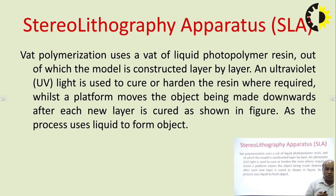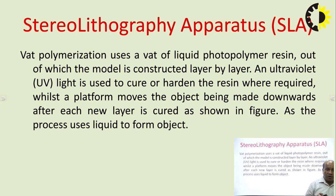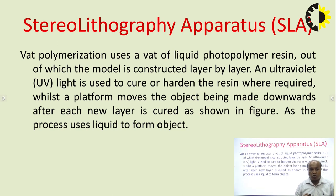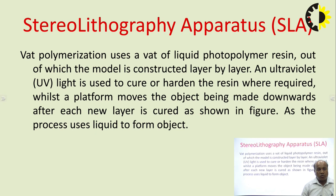The first technology is Stereolithography Apparatus, or SLA. This was the first technique developed, around 1982. It uses vat photopolymerization — a vat of liquid photopolymer resin — from which the model is constructed layer by layer. An ultraviolet light is used to cure or harden the resin, while the platform moves the object downward after each new layer is cured.